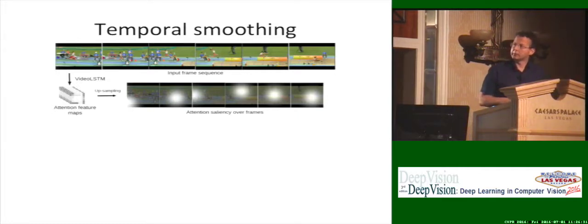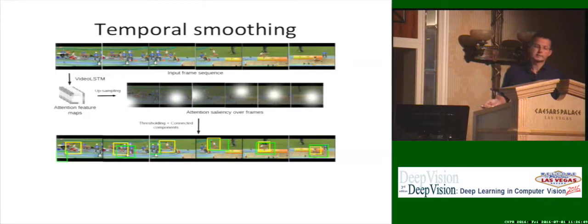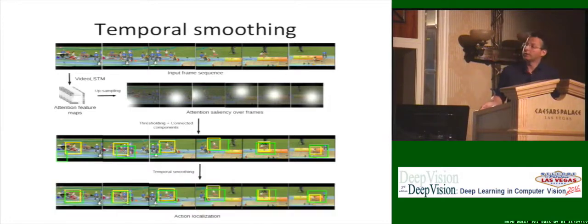The VideoLSTM will generate an attention map. Here we have some frames from a video of a long jump, and it will generate attention maps like this. We observe that although the attention tends to follow the actor most of the time, it can happen that it triggers on aspects in the background. Sometimes for a certain action, the context is also very valuable information. The LSTM can decide by itself for this particular frame, this piece of information is more important. You get a bit of a shaky localization result in that sense. But by simply adding a temporal smoothing, we can factor out the wrong location.